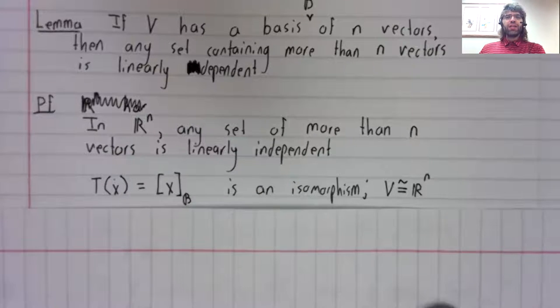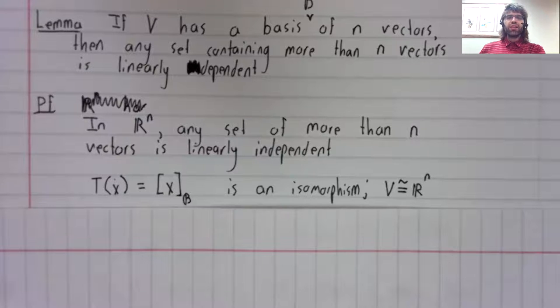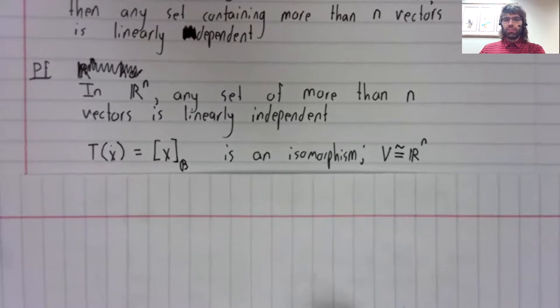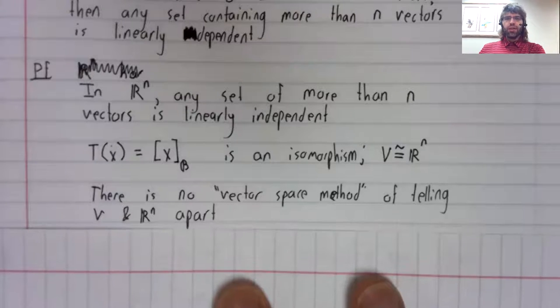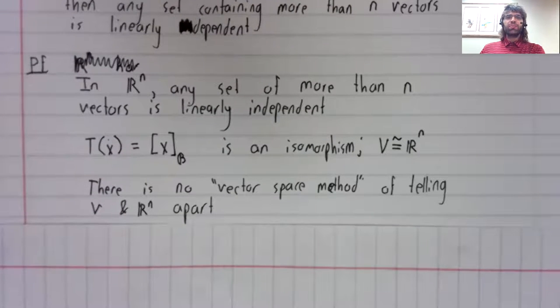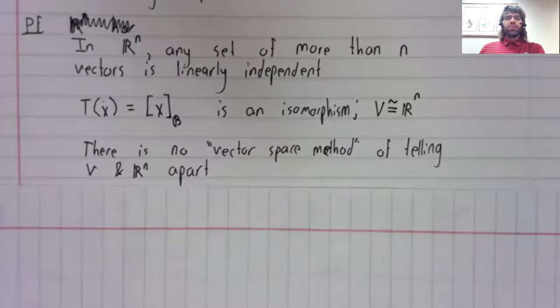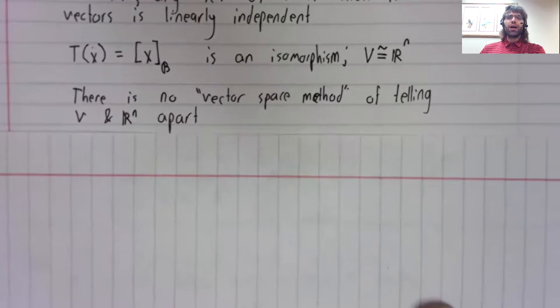If V has a basis consisting of N vectors, then V is isomorphic to R^n. The coordinate transformation is an isomorphism. From a vector space point of view, isomorphic spaces are identical. So there is no vector space method of distinguishing V from R^n.